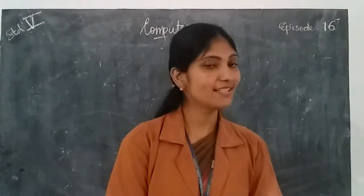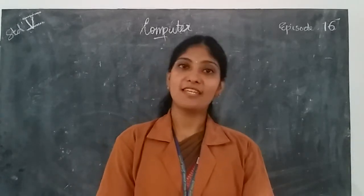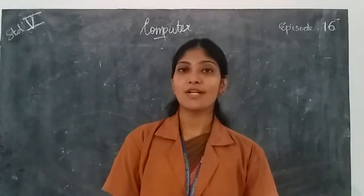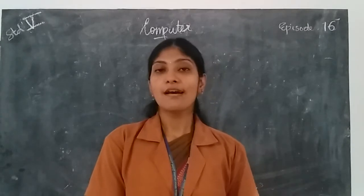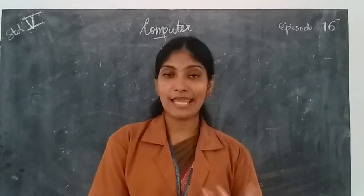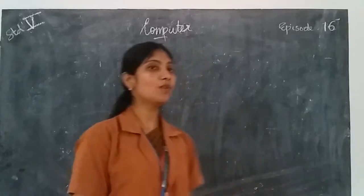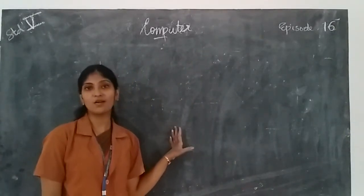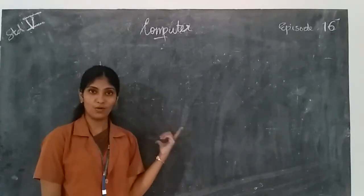Hello children, welcome to another class of computer lesson. Today we are going to learn the remaining workshops in this chapter. In our previous class, we discussed how to enter data in a spreadsheet and how to select data. We know a worksheet consists of rows and columns — a grid of rows and columns is known as a worksheet, and a collection of worksheets is known as a workbook.